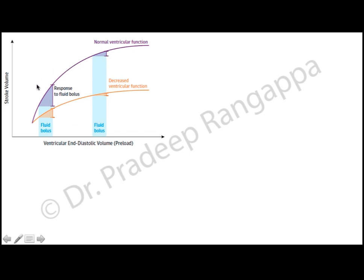If you have a patient with normal systolic function, their stroke volume response to a fluid bolus is much better. As you go up the curve, the response gets less. Ideally, any patient you think would respond to fluid should be in the ascending part of the curve. In patients with decreased ventricular function, the response in the ascending limb is much less and becomes almost negligible in the upper part of the curve. Fluid responsiveness must be interpreted in light of whether the patient has normal or poor LV function.